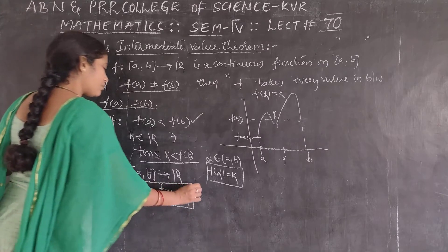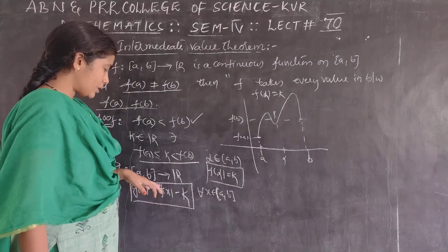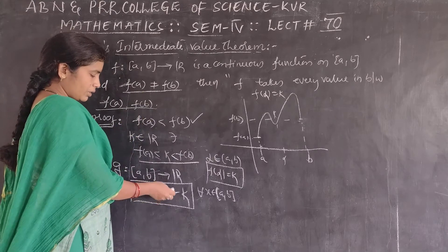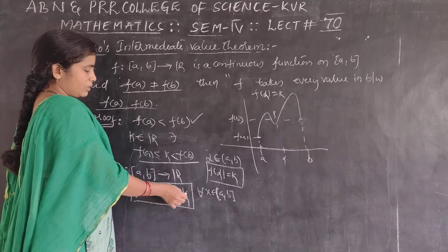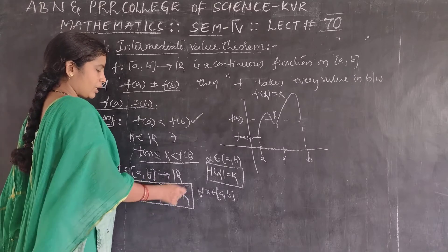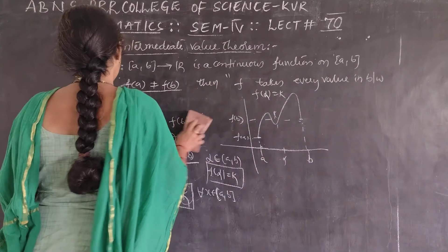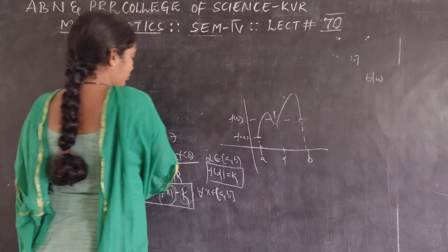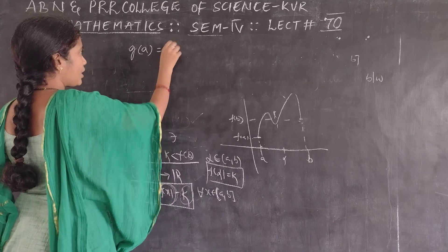Here we can define this function. Is it continuous or not? Here k is a real number, a constant. Constant function is continuous. This function is f of x, which is continuous. Continuous function minus continuous function - by algebra of continuous functions, g of x, that means f of x minus k, is continuous. And g of x is a continuous function on closed AB.